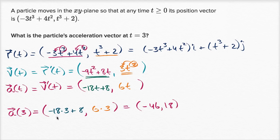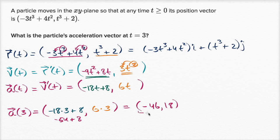Checking the arithmetic: negative 54 plus four is negative 50, plus another four is negative 46. So the acceleration vector at t equals three is negative 46 comma 18.